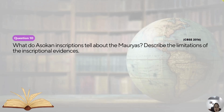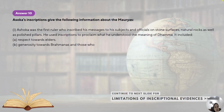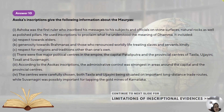Question number ten: what do Ashokan inscriptions tell us about the Mauryans? Describe the limitations of inscriptional evidence. Ashokan inscriptions give the following information: Ashoka was the first ruler who inscribed his messages to his subjects and officials on stone surfaces — natural rocks as well as polished pillars. This included respect towards elders, generosity towards Brahmins, and respect for religion and tradition. There were five major political centers: Pataliputra, Takshashila, Ujjain, Tosali and Suvarnagiri. According to Ashokan inscriptions, administrative control was strongest in the areas around the capital and provincial centers. Both Takshashila and Ujjain were situated on important long-distance trade routes, and Suvarnagiri was for the gold mines of Karnataka.